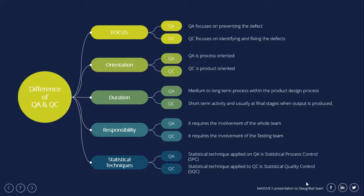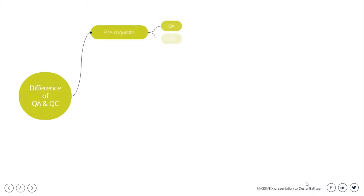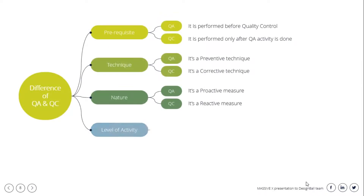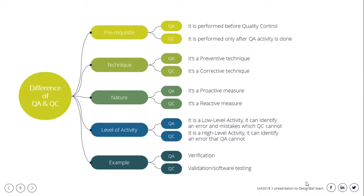Regarding responsibility, quality assurance is the responsibility of the whole team, whereas quality control is the responsibility of the testing team. The statistical technique applied to quality assurance is statistical process control, whereas the statistical technique applied to quality control is statistical quality control. Quality assurance is performed before quality control, whereas quality control is performed only after quality assurance activity is done. Quality assurance is a preventive technique, whereas quality control is a corrective technique.